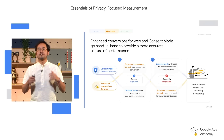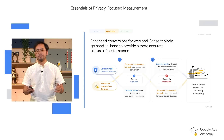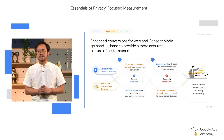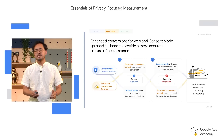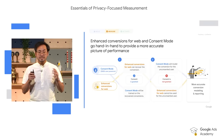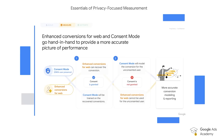What Enhanced Conversion and Consent Mode have in common is that they both leverage conversion modeling. Today, you could have your measurement foundations built on very robust observable data, including implementing Enhanced Conversion. But this might not be enough, as we could still have some gaps due to user consent choices, increased browser regulations, or even movement across devices. It is therefore important that we leverage machine learning to help fill those gaps. More observable data will also mean better modeling for Consent Mode.